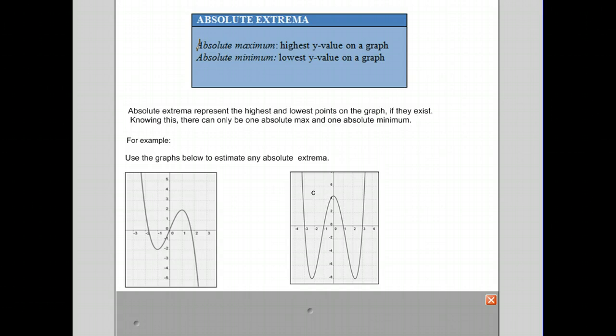For example, let's look at the graph on the left. In this graph, there is no absolute maximum because the highest point continues on forever upward, and the lowest point continues forever downward. Since the graph continues both upward and downward, there are no absolute maximums or minimums.